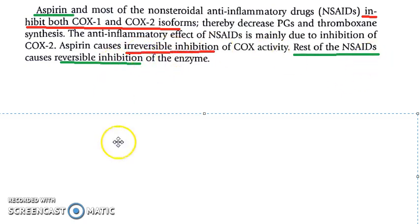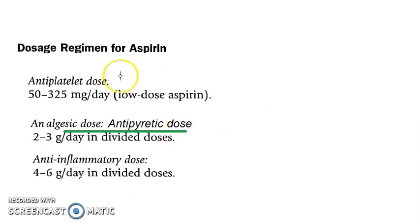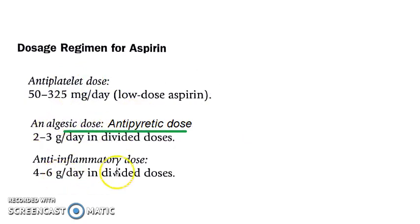At low doses, aspirin causes an antiplatelet effect. At 2 to 3 grams per day it causes an analgesic and antipyretic effect. At high doses it causes anti-inflammatory action. Let us now look at the details of how exactly it produces each of these effects.